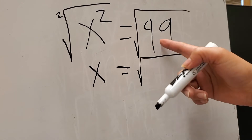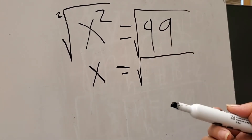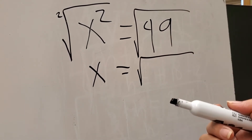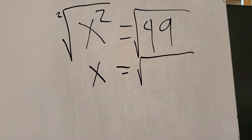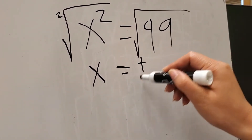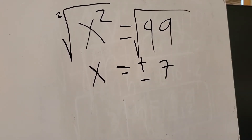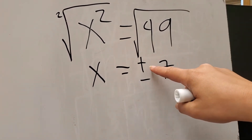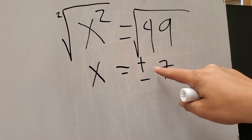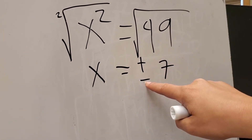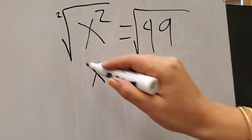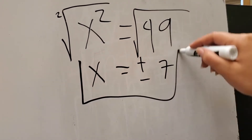And what is the square root of 49? There are actually two values of the square root of 49 — positive and negative 7. Why do we have two values? Because if you multiply positive 7 times positive 7, the answer is 49. And negative 7 times negative 7, the answer is also 49. So we have two values of x.